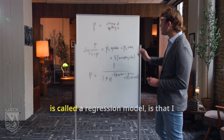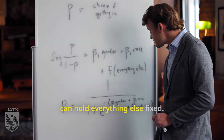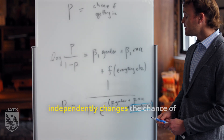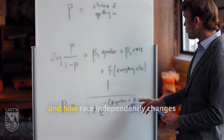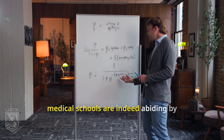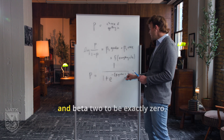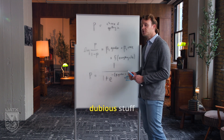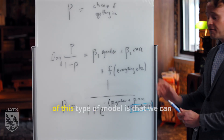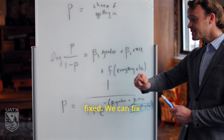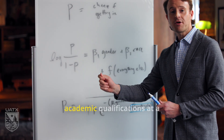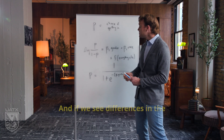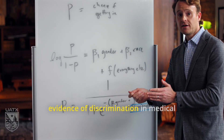This is called a logistic regression model. The beauty of it is that I can hold everything else fixed — all other credentials and academic qualifications — and see how gender independently changes the chance of getting in, and how race independently changes the chance of getting in. If these medical schools are abiding by the Civil Rights Act, we'd expect beta 1 and beta 2 to be exactly zero, or statistically indistinguishable from zero. If they are not, then there's potentially something dubious going on.